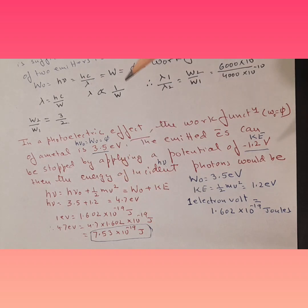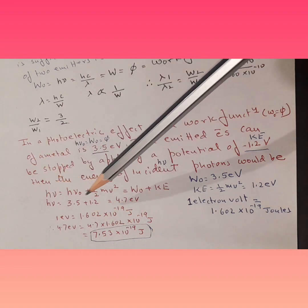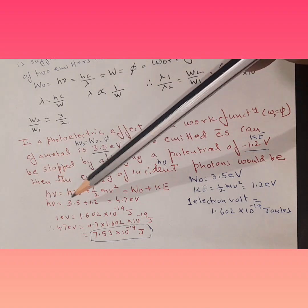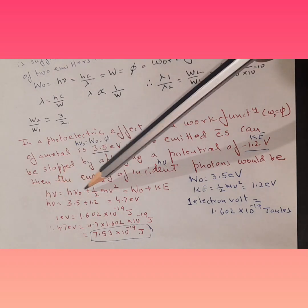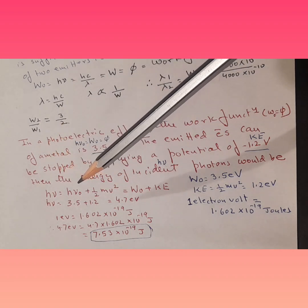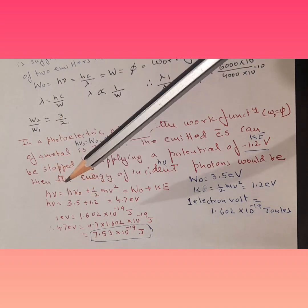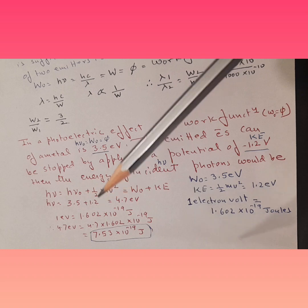Whenever you are doing physics, as soon as the theory is done go into numericals, and when you are doing numericals understand the formula well. Then go into the derivation again — understand how we derived that equation. That would make your physics strong. When you apply numericals to a derivation, your clarity about the topic increases.